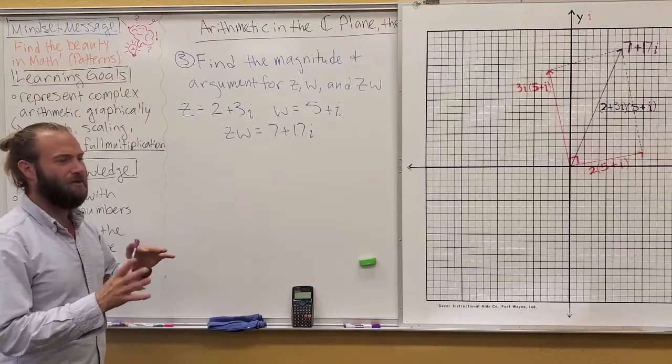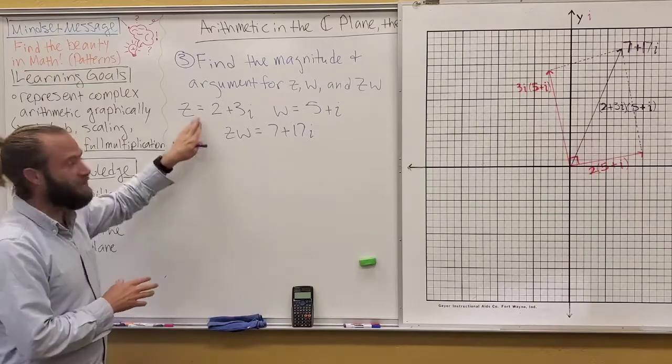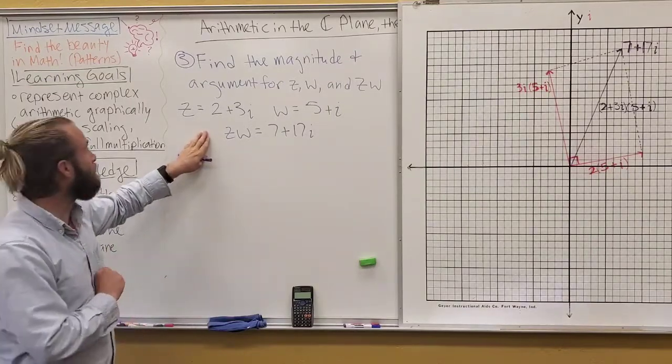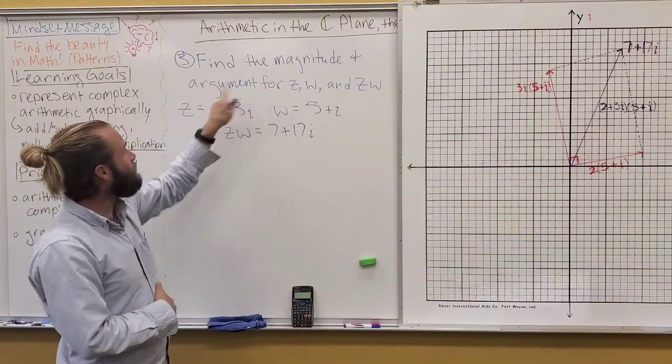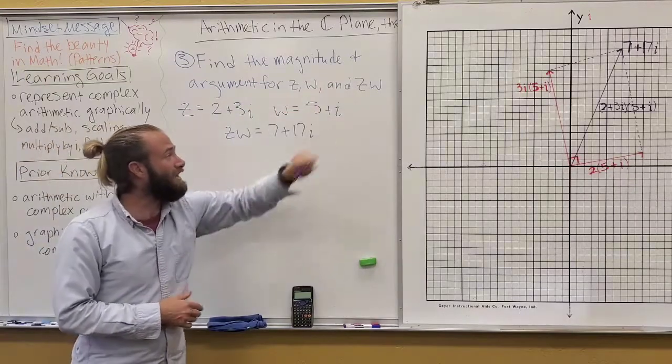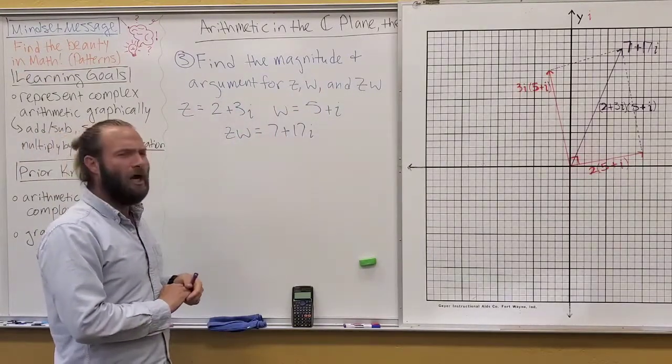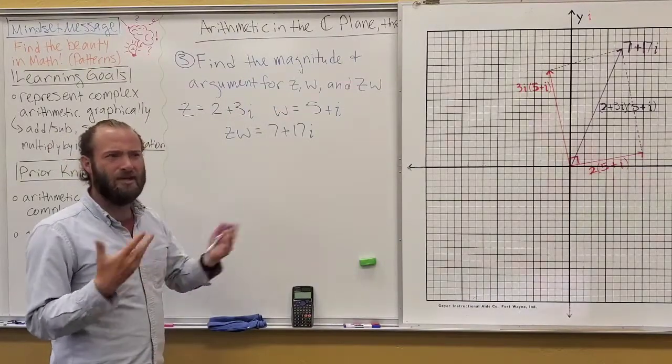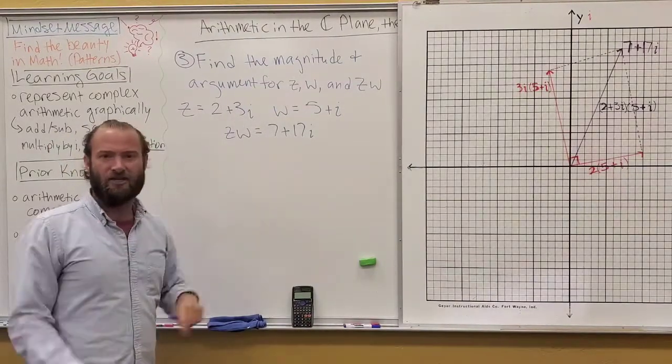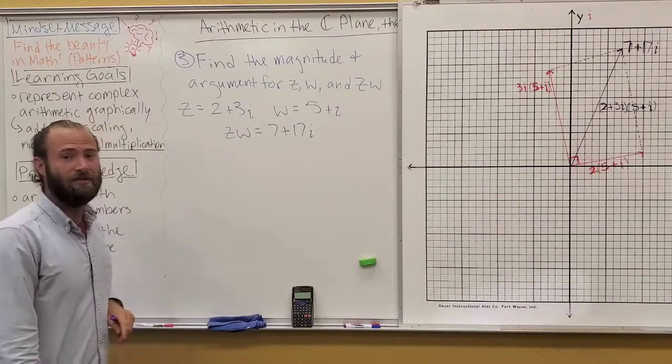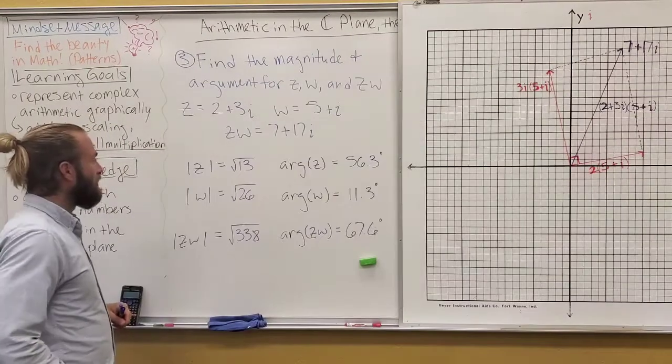This is important because it gives us another visual for understanding visually how multiplication works in the complex plane. And it's also important, like I said, because it forms the foundation of proving the multiplication law, which we may do at some point, but not in this video right now. So, this is really kind of the same example because we're talking about the same idea. We're using the same vectors here, the same complex numbers. So, find the magnitude and argument for Z, W, and ZW, which we've already calculated Z times W. If you feel like you need more practice, you can pause this now. If you don't, you can just go ahead and go into this and we'll just talk through it.